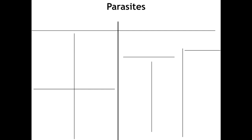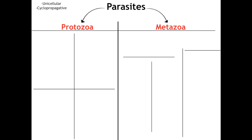Just to get our footing with these parasites, let's break them up into categories. Starting off with the two major kingdoms: protozoan and metazoan. Our protozoans are unicellular organisms that follow a cyclopropagative life cycle, meaning they use their host for both reproduction and developmental purposes. The metazoans, or our worms, are multicellular, much larger, and follow a cyclo-developmental life cycle, meaning they only use their host for developmental purposes, not for reproductive purposes.